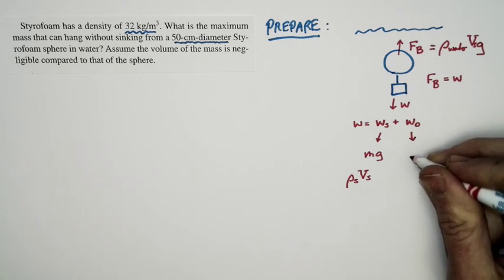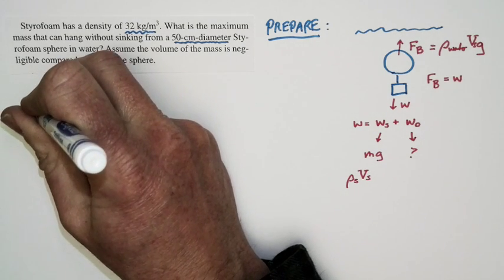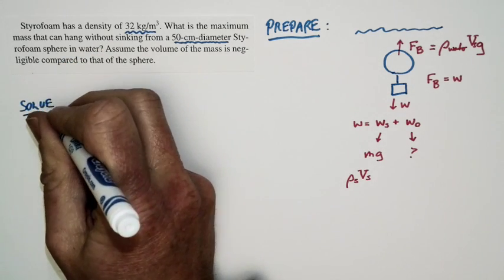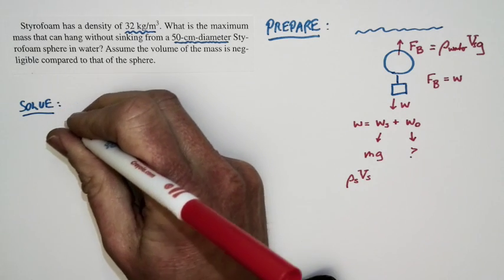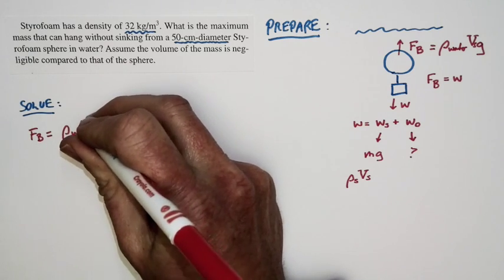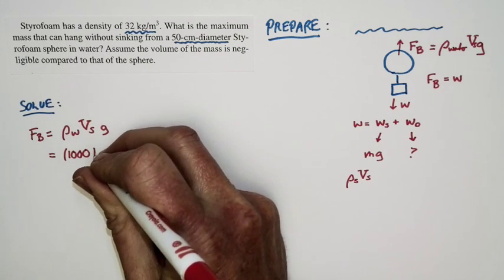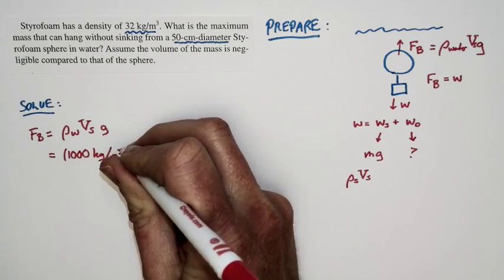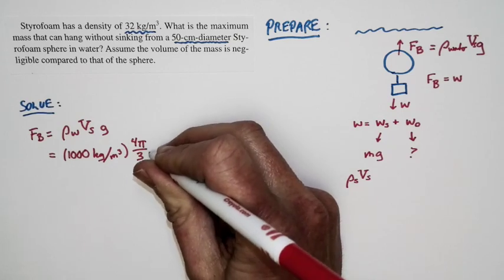The weight of the object, this is the thing which we're looking for. Now let's proceed to our solution. Let's start putting some numbers in. So I'm going to equate the buoyant force to the weight force. Well, the buoyant force is equal to the density of water times the volume of the styrofoam sphere times G. Well, the density of water is 1,000 kilograms per cubic meter. The volume of the sphere, like the volume of any sphere, is 4 thirds pi r cubed.